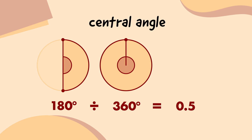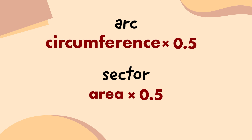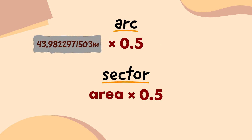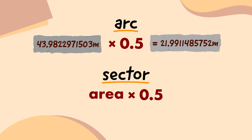Well, once we know what the central angle divided by 360 is equal to, we multiply that by the full circumference to calculate the arc length, and by the full area to calculate the sector's area. So if we start by working out the arc length, we'll need the circumference, which I worked out to be 43.9822971503 metres. So, if we multiply that number by 0.5, we get 21.9911485752.